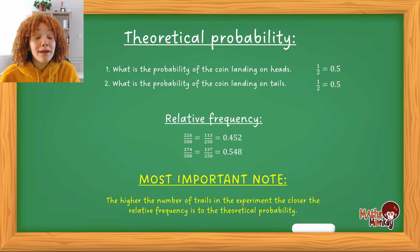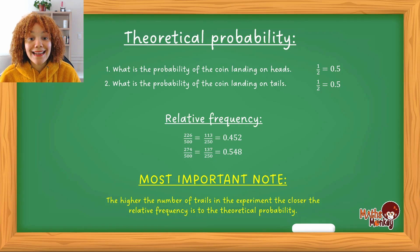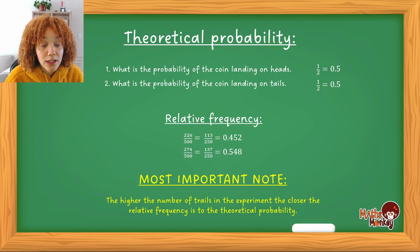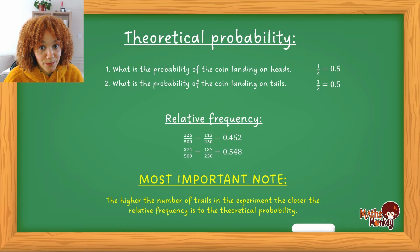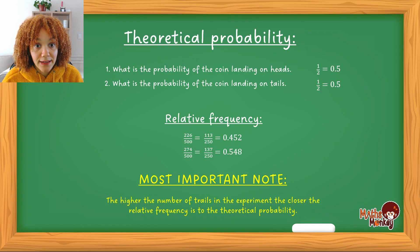You will see that the relative frequency will always move closer and closer to the theoretical probability's answer. So the theoretical probability in this case is a half, so the more our trials are, the more relative frequency will move closer and closer to a half. Okay so that is essentially the difference between relative frequency and theoretical probability.